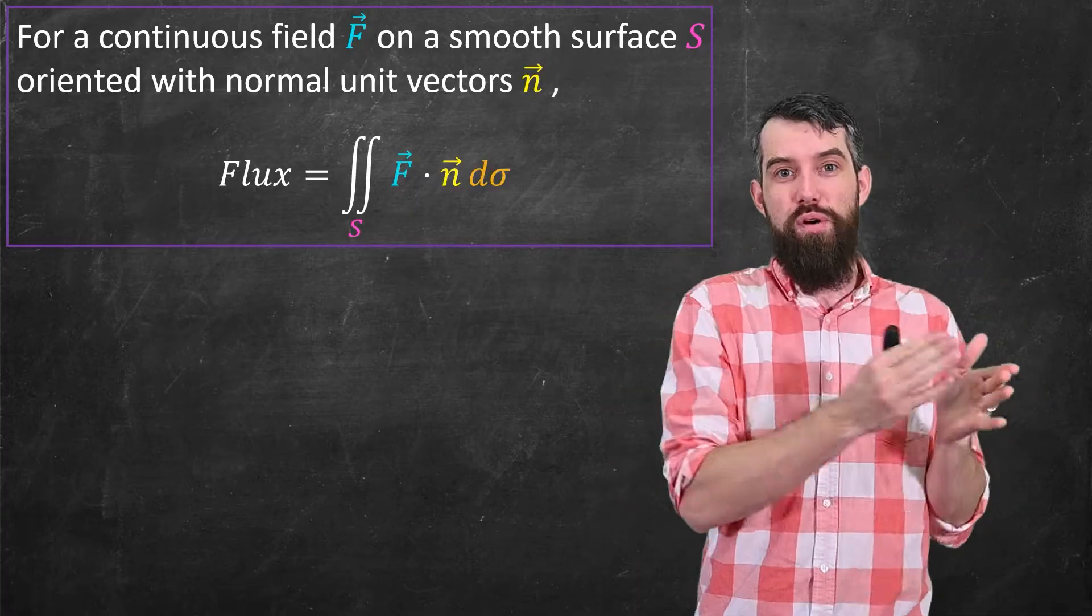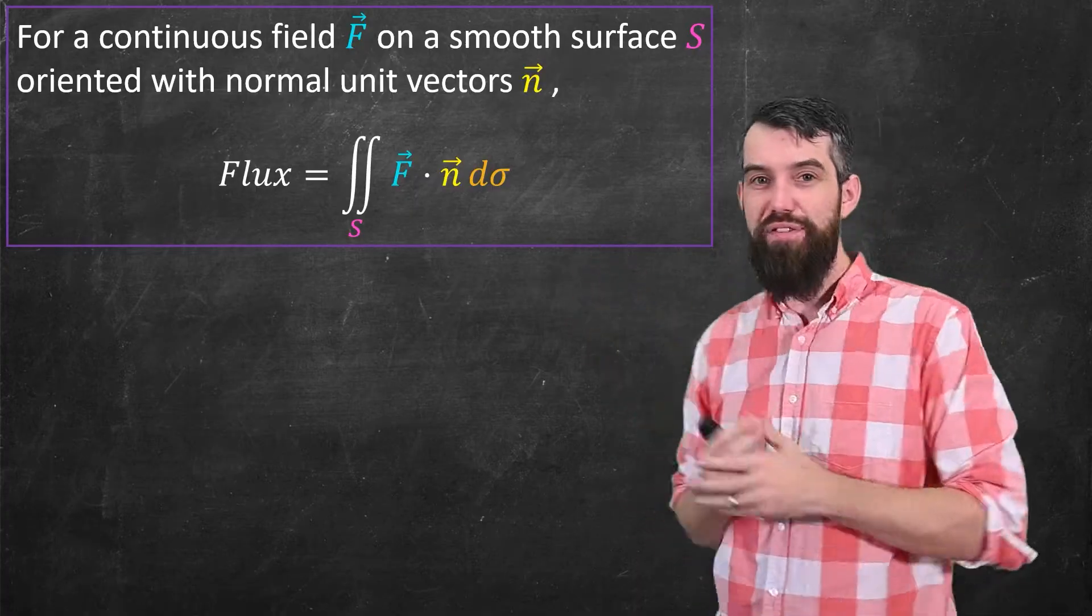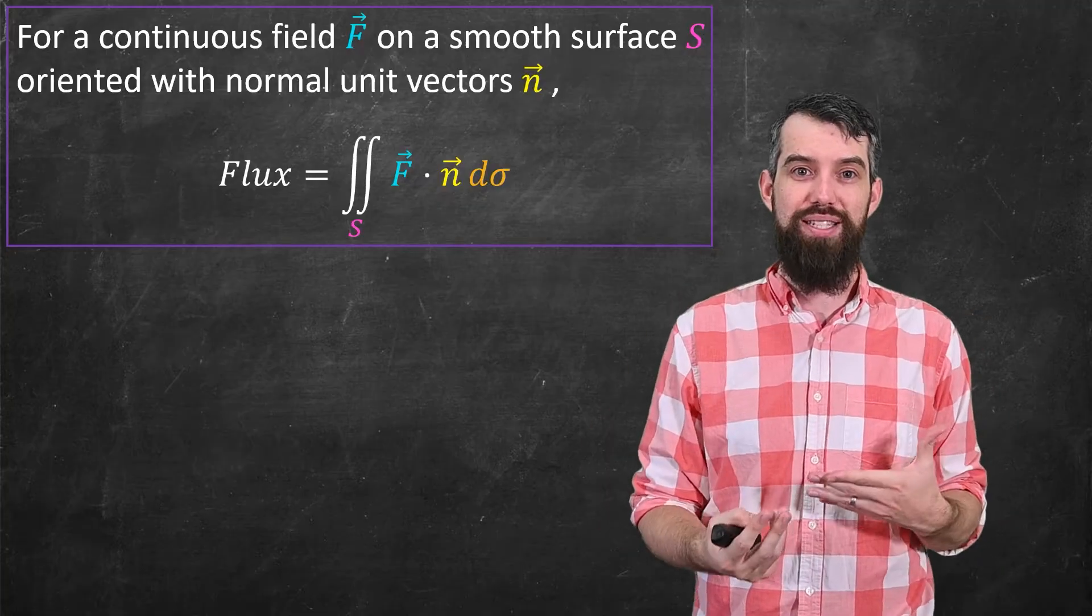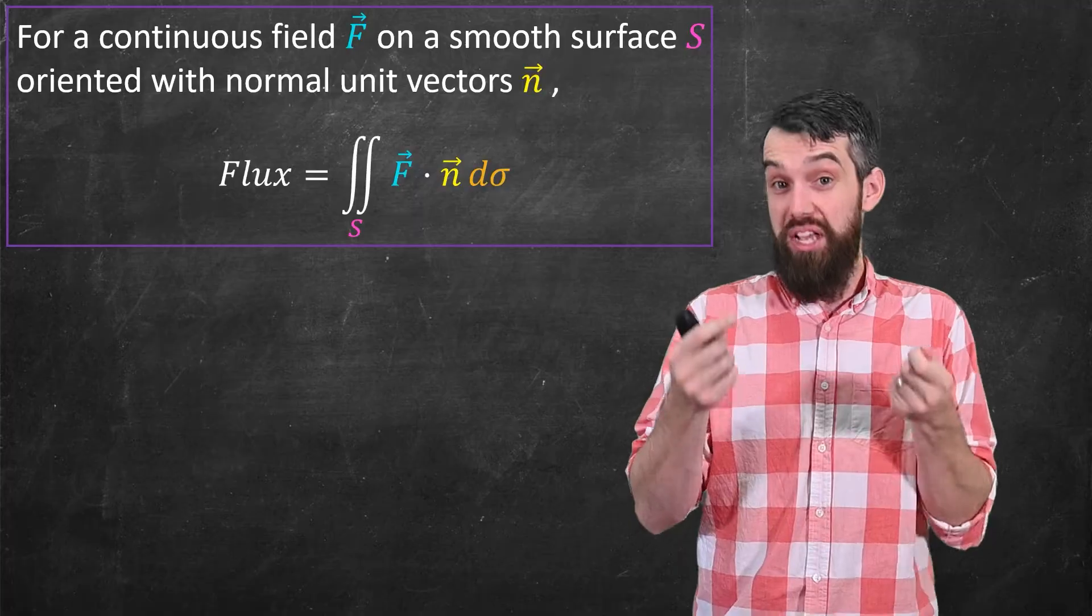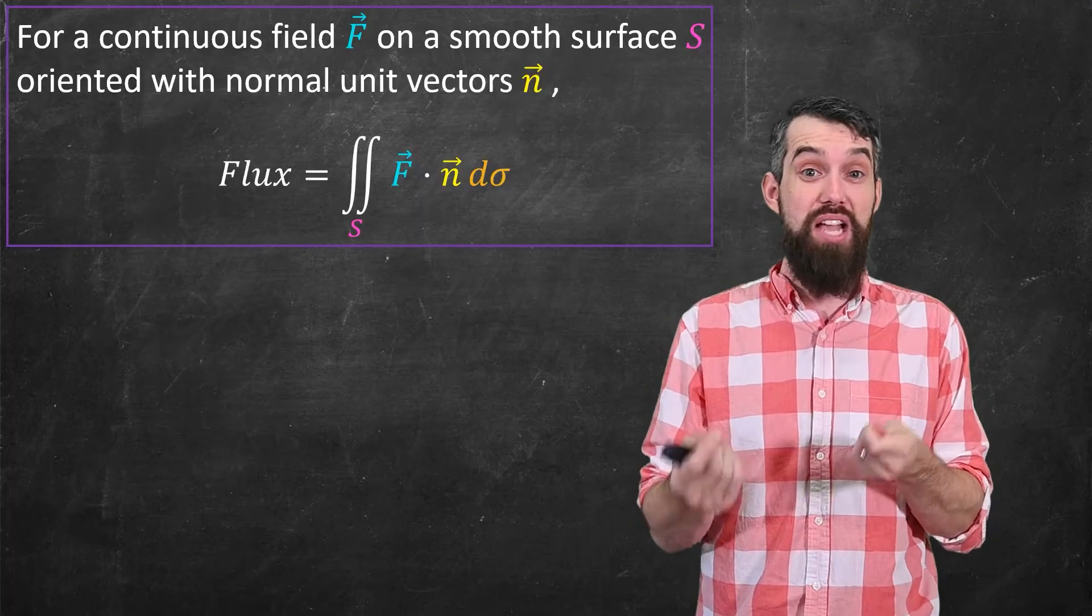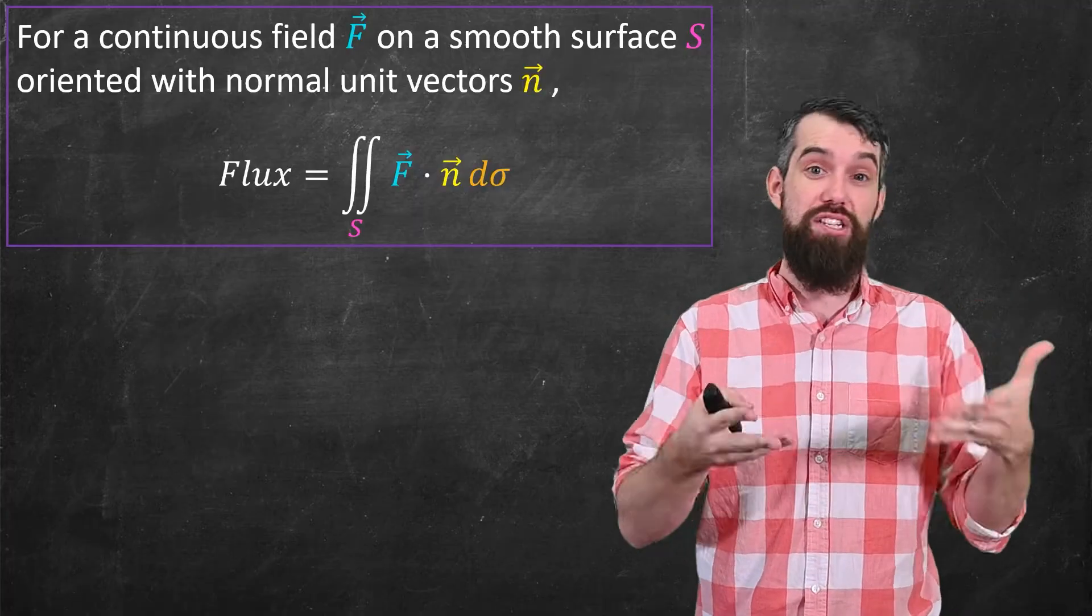Now, as we do over and over in vector calculus, we come up with some definition that makes good intuitive sense to us in terms of ds or d sigma, but then we always had to find a way to compute it depending on the way the underlying surface or curves are actually described.